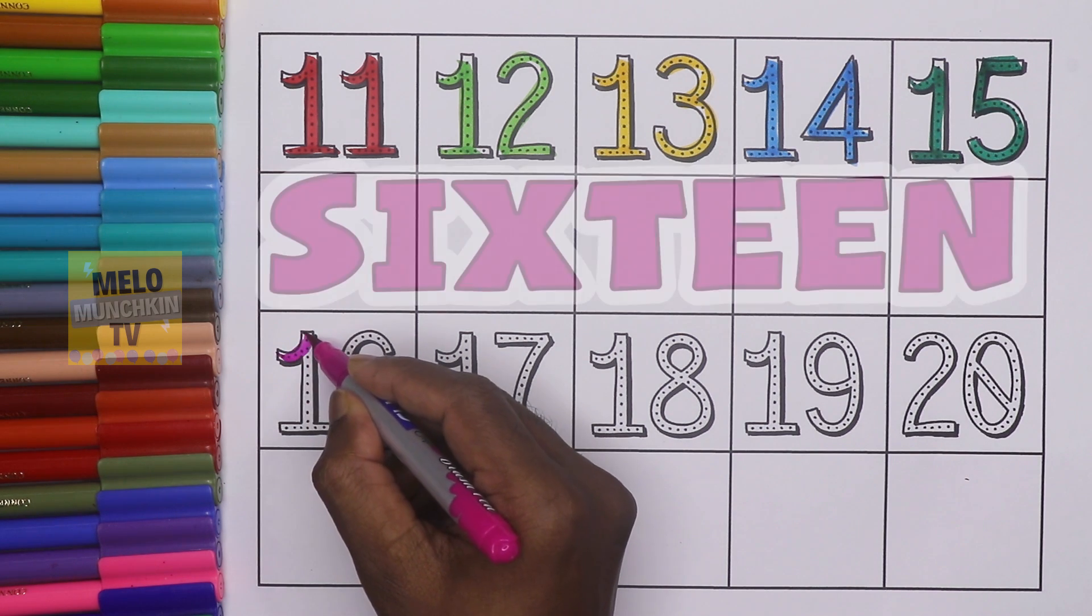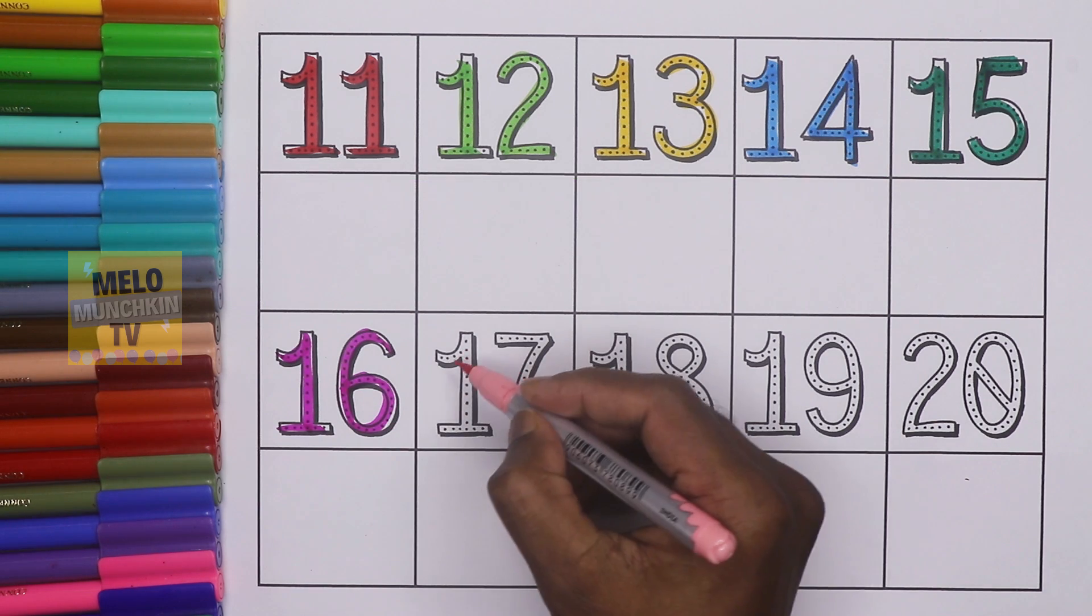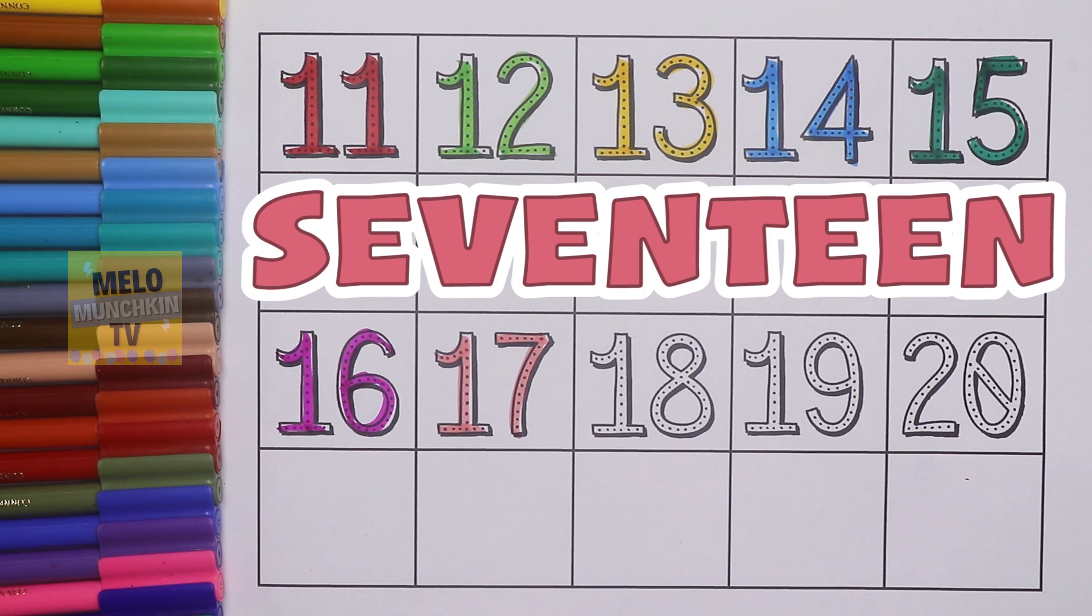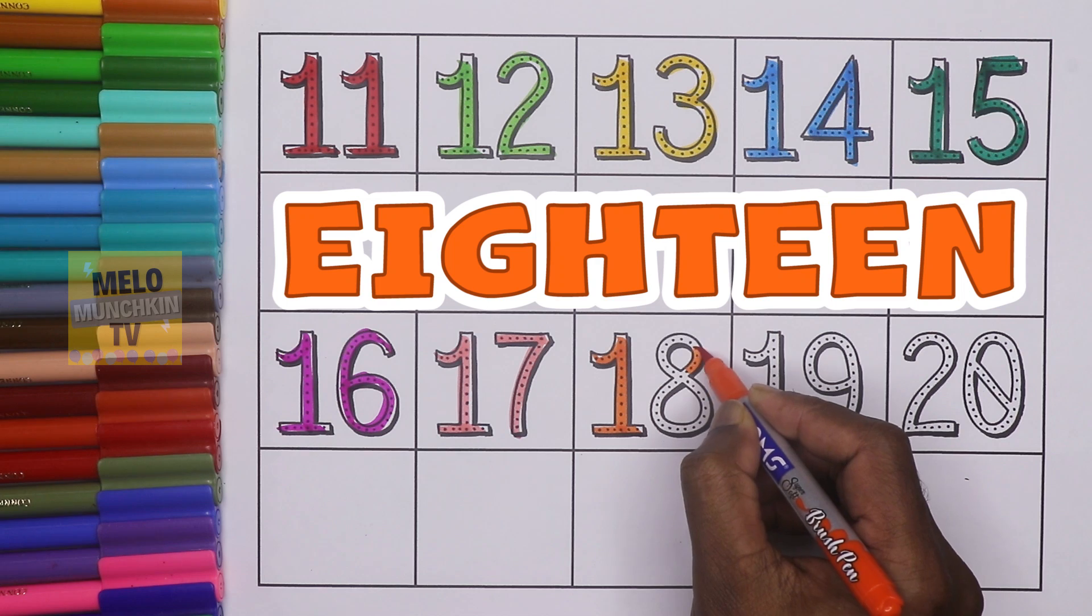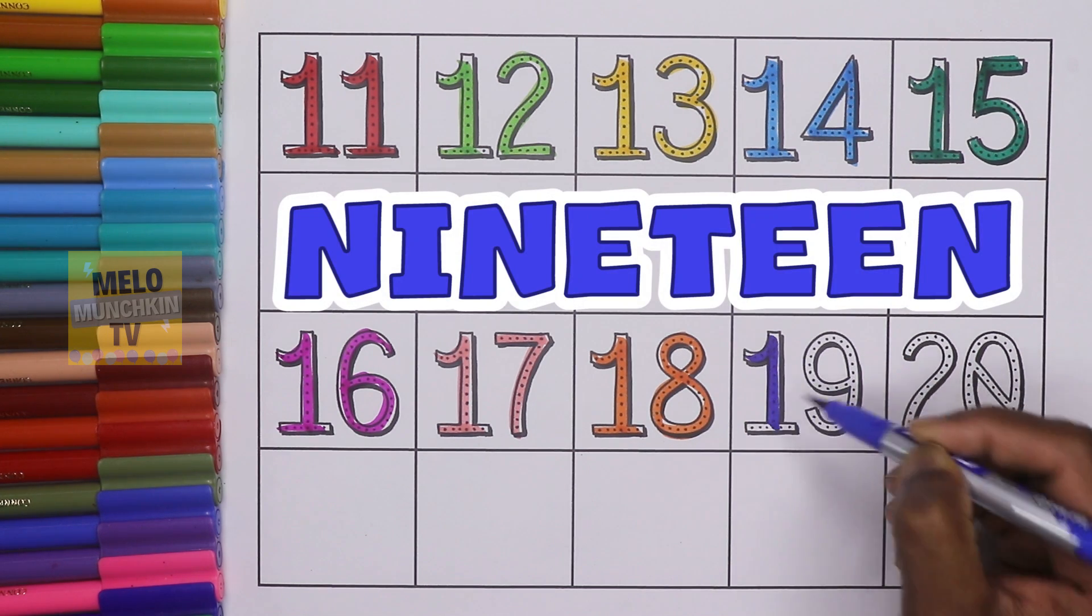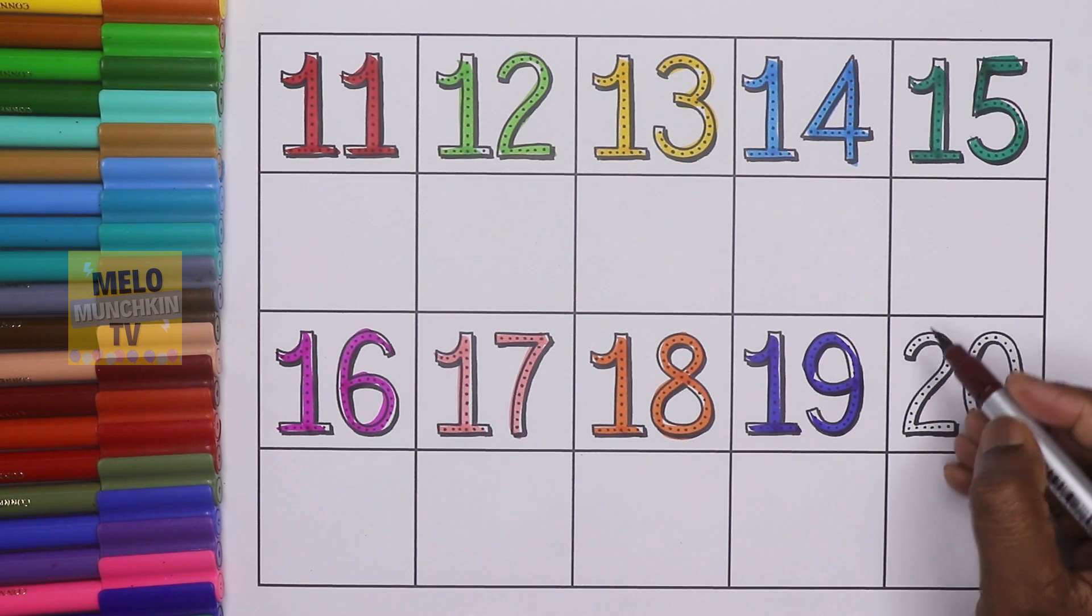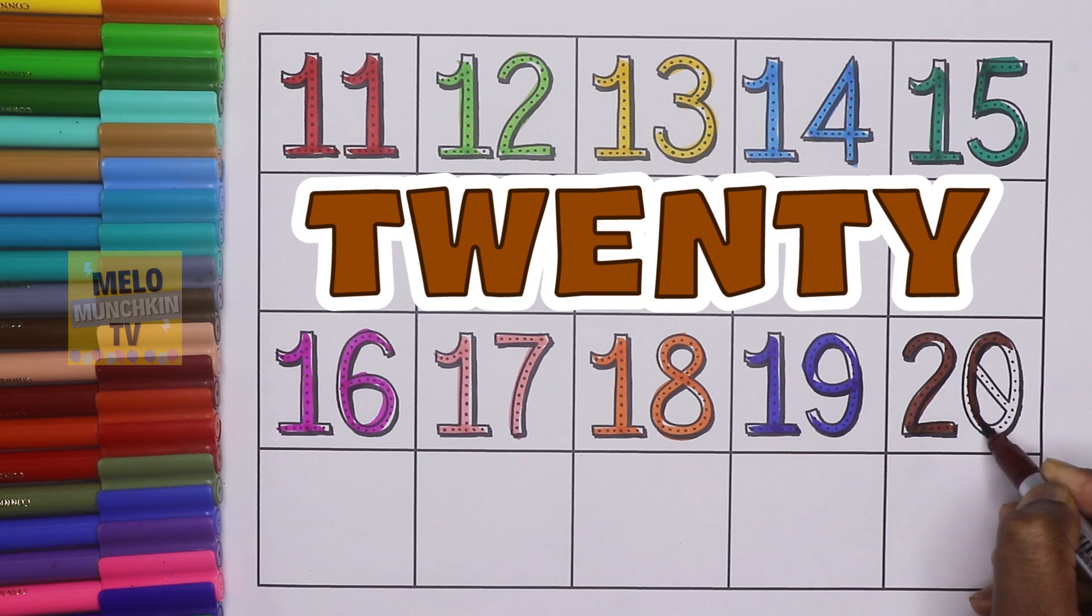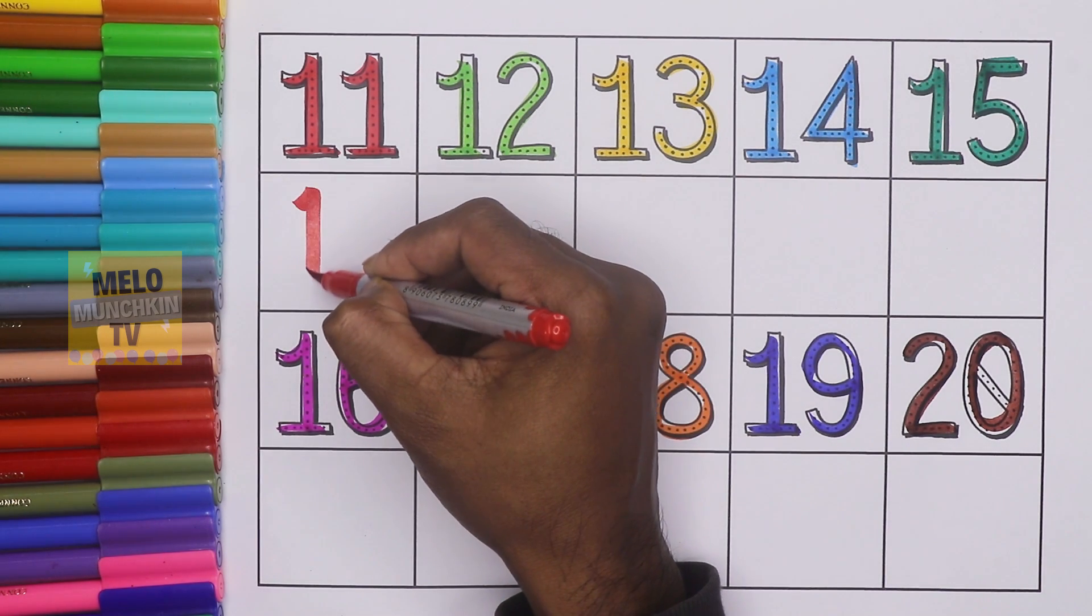16, S-I-X-T-E-E-N, 16. 17, S-E-V-E-N-T-E-E-N, 17. 18, E-I-G-H-T-E-E-N, 18. 19, N-I-N-E-T-E-E-N, 19. And lastly, 20, T-W-E-N-T-Y, 20.